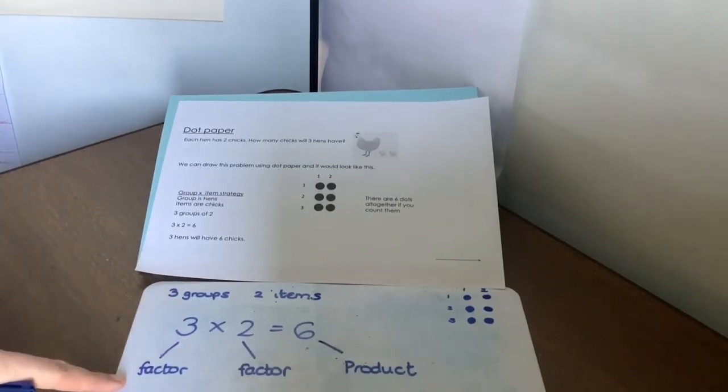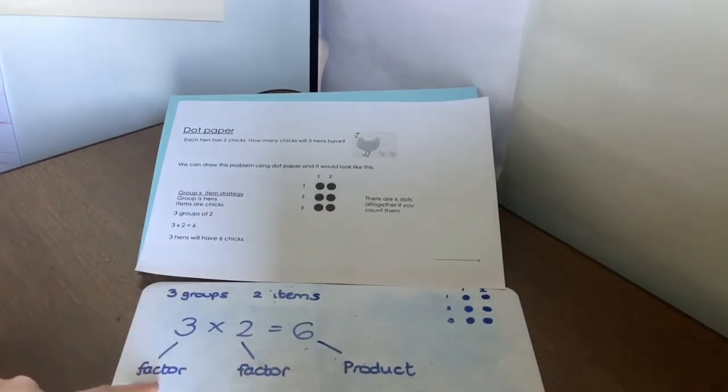So a factor is 3. A factor is 2. And when we multiply the 2 factors together, we get a product.